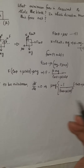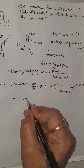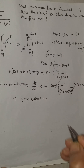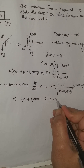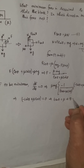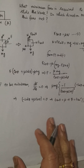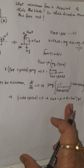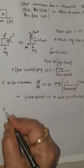Setting the bracket to zero: minus sin theta plus mu cos theta equals zero, from which tan theta equals mu, or theta equals tan inverse of mu. So the force must act at an angle of tan inverse mu with the horizontal.